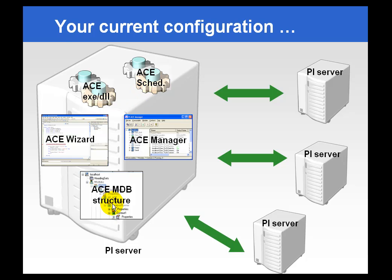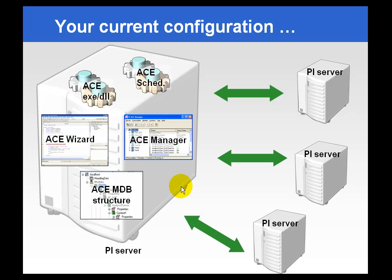That setup also has access to the module database structure on that server. The ACE machine — or PI server with ACE on it — can then read from and write to any other PI server that it can see across the network and has access to. There is an advantage to this configuration: speed. Everything is on one machine, with no need for network communications between the engine and the PI server, or the manager and the engine.